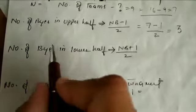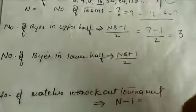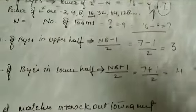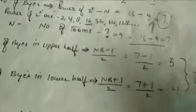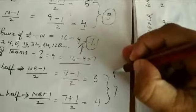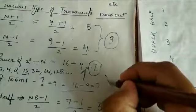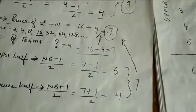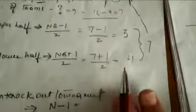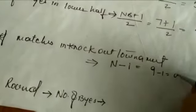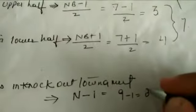We go according to the workings and formulas. Number of byes in lower half: (7+1)/2 = 4. And 4 plus 3 is always 7, which equals the total number of byes we calculated. Now number of matches: N minus 1, so 9 minus 1 equals 8. The total number of matches will be 8.